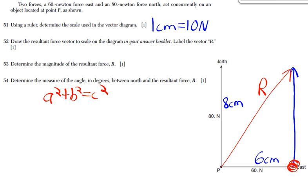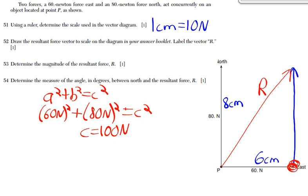So we have 60 newtons for A, we have 80 newtons for B. When we end up solving for C, you should get 100 newtons.